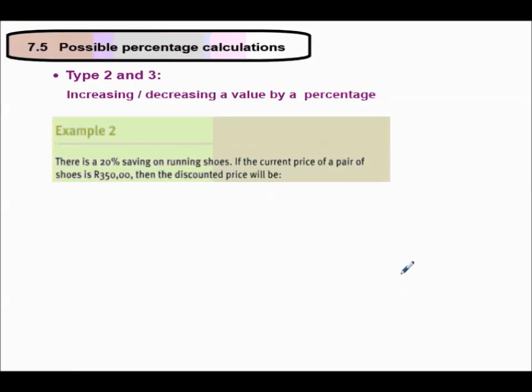Type 2 and 3. Type 2 is increasing a value by percentage. Type 3 is decreasing a value by percentage. Increase means you're going to add. Decrease, you're going to subtract.